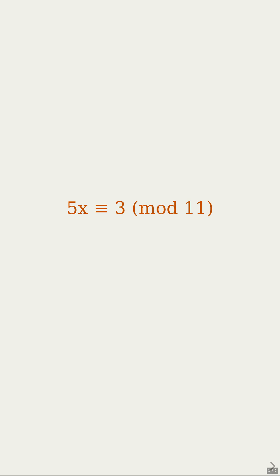This equation, 5 times x is congruent to 3 modulo 11, does have a solution, but the extended Euclidean algorithm is quite lengthy for such a simple case. We won't use it. For small modulus numbers, we can be clever.